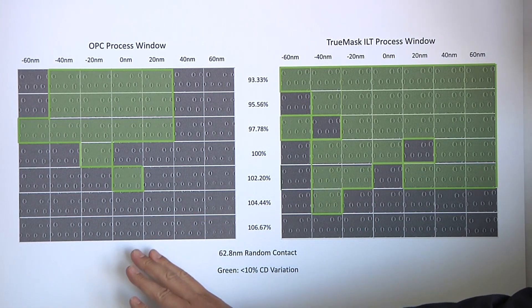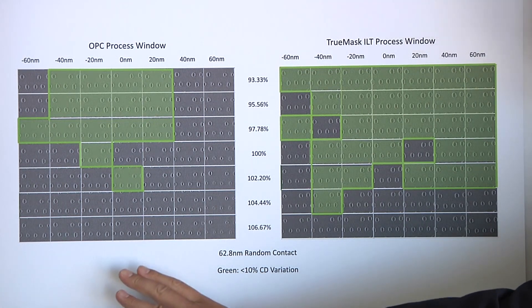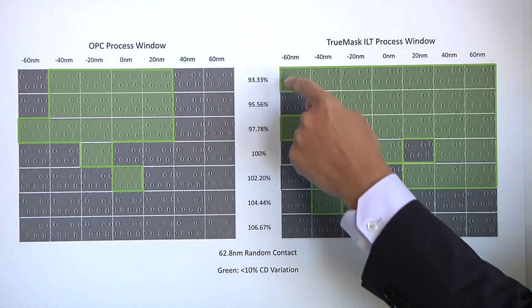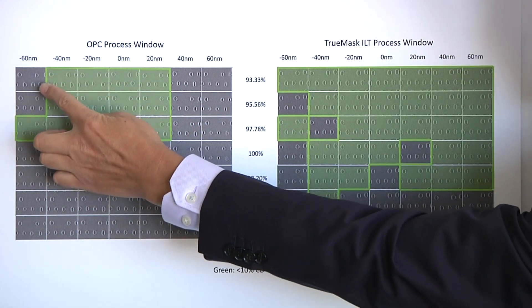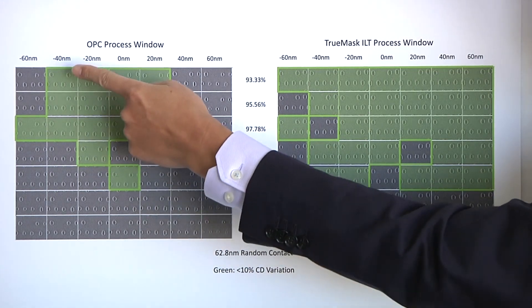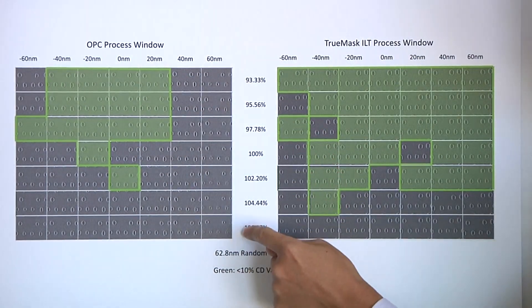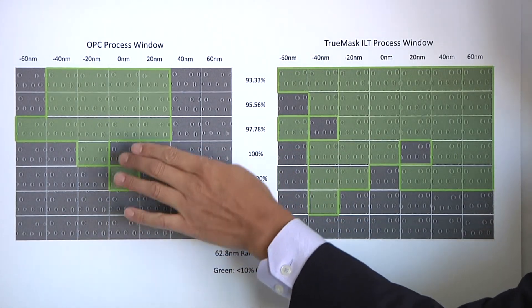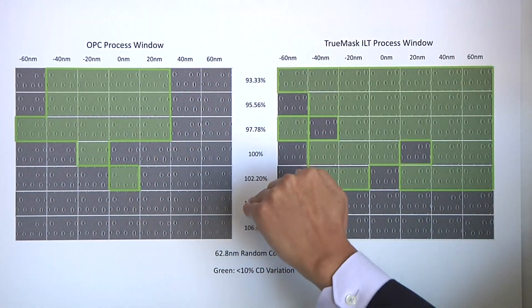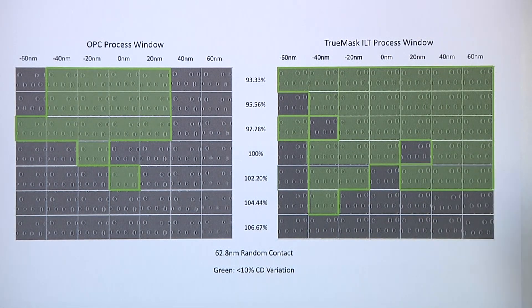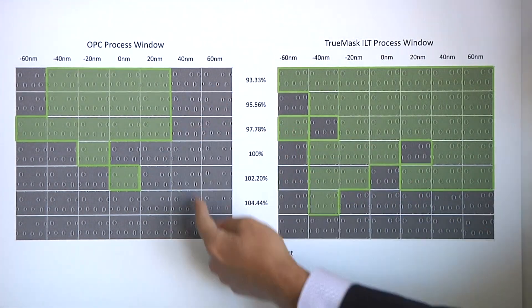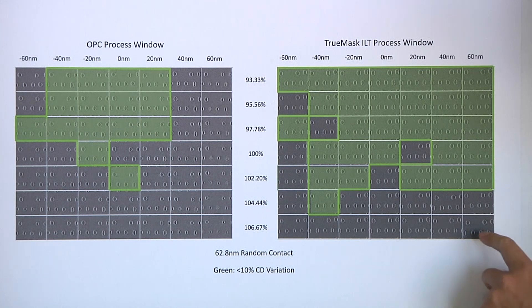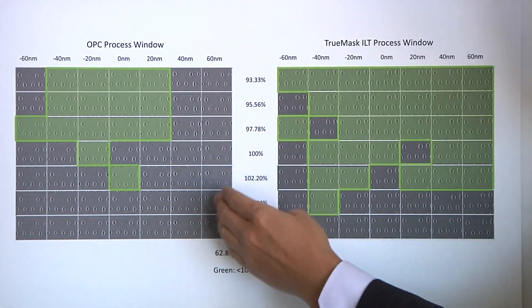So here, this is a random contact layer, and we basically comparing the OPC print with our curvilinear ILT print. So the left side was processed using the process of record, the OPC, with their model, and it's printed, the wafer is printed in this kind of a matrix. So they basically print the same pattern at a different focus, from minus 60 nanometer to 60 nanometer. They also change the dose, so the one in the center, this is kind of like the nominal condition. Then, they vary focus, they also vary the dose.